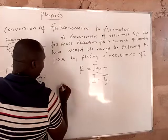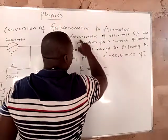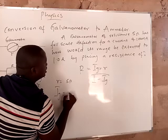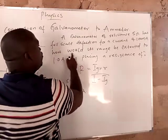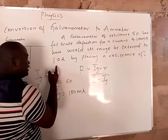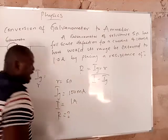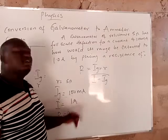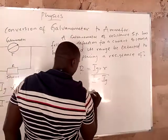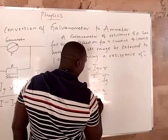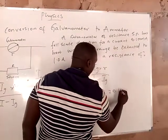From the question, a galvanometer of resistance means small r is 5 ohms. Full scale deflection of current means IG is 100 milliamperes. The range extended to 1 ampere means I is 1 ampere. Note that 100 milliamperes must be converted to amperes — divide by 1000, which gives you 0.1 amperes.